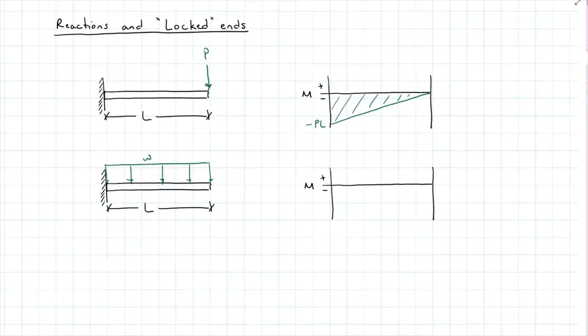If I have a distributed load W, that means its moment diagram is going to be a second degree curve, second degree, with the maximum value of negative WL squared divided by 2.